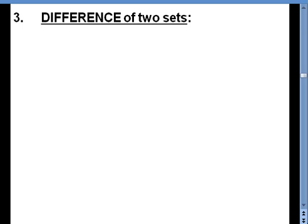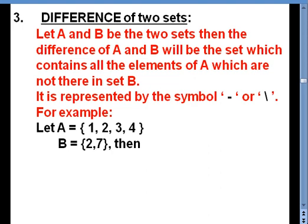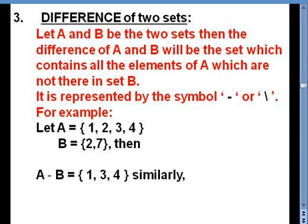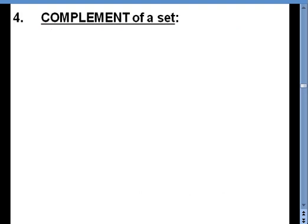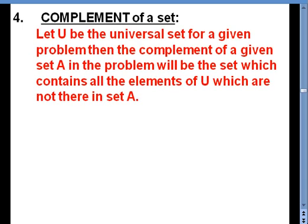The third operation is the difference of two sets. The difference of A and B is the set which contains all the elements of A which are not in set B. Taking the same sets, A equals {1, 2, 3, 4} and B equals {2, 7}, A minus B equals {1, 3, 4}. Though 2 is in A, it is not included because it is in B. Similarly, B minus A equals {7}, since 2 is in A.